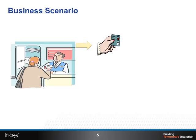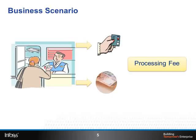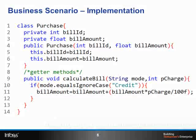The retail store management wants to allow customers to pay their bills in two modes: either using a credit card or by cash. If the customer chooses to pay by credit card, then a processing charge is applicable on the bill amount. If the customer chooses to pay by cash, then processing charge is not applicable. Hence, in this scenario, it is required to accept the mode of payment and processing charge as inputs using command line arguments.